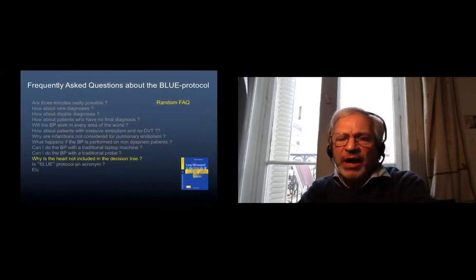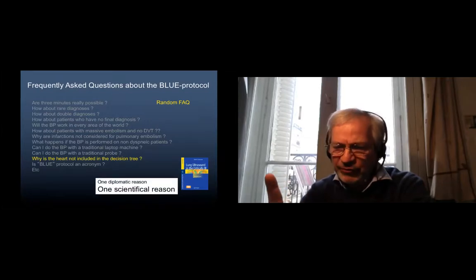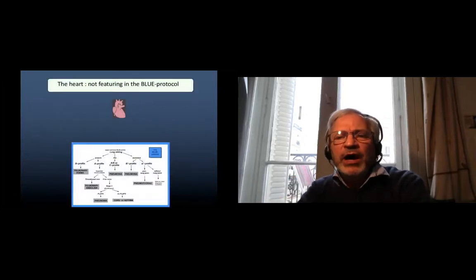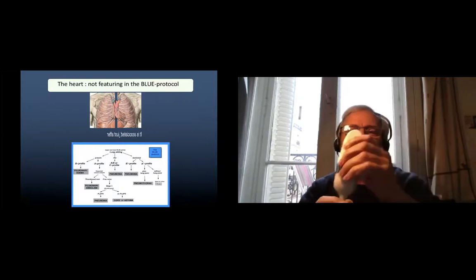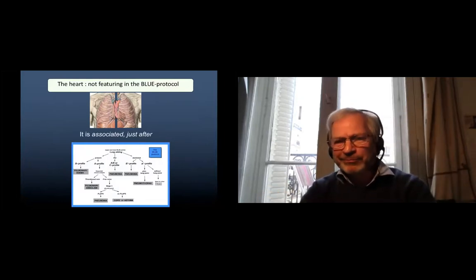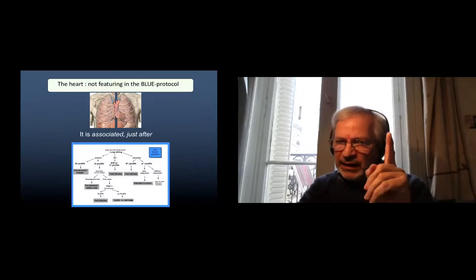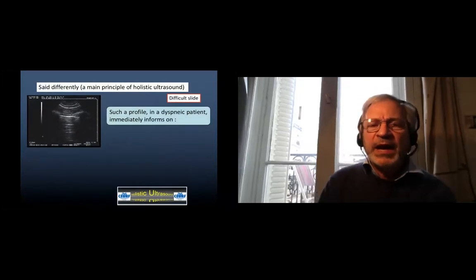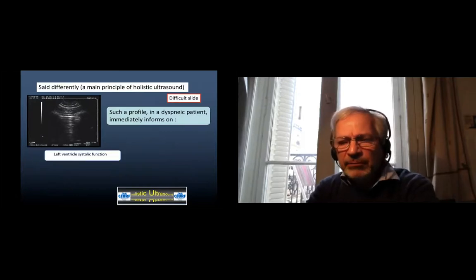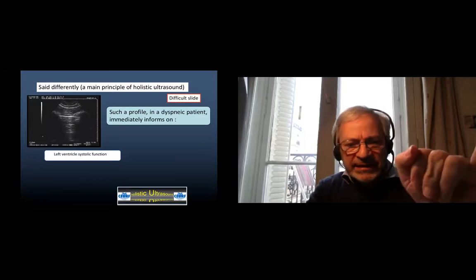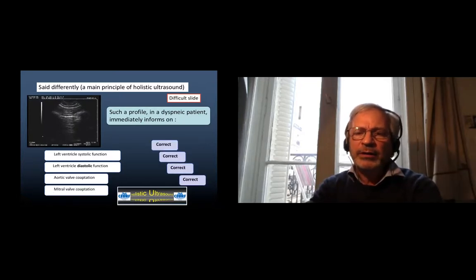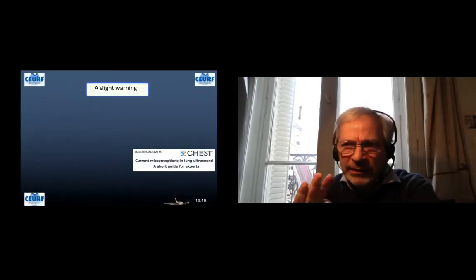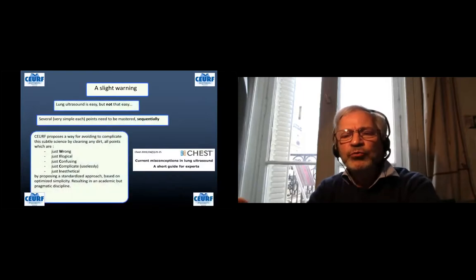People ask why is the heart not included in the decision tree. And we quietly give a scientific reason. Scientifically, the heart does not feature because we look at the suffering organ, which is the lung. But of course, once we have the probe in our hands, we scan the heart, of course, like any doctor would do. It is associated, that is not included, it's not the same. Say it differently: I see this profile in a dyspneic patient, I can say very fast that the left ventricle systolic and diastolic function, as well as the coaptation of the left valves, work, because I don't see any sign of pulmonary edema. The dyspnea does not come from a left heart disease.